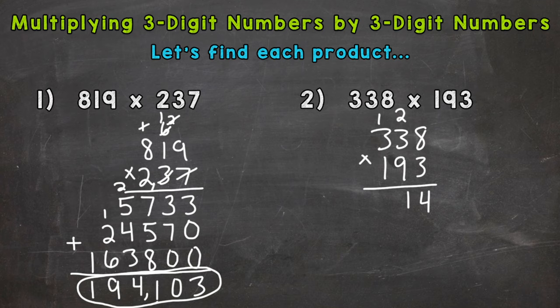We move to the 9 which has a value of 90, so we need a 0 here. 9 times 8 is 72. 9 times 3 is 27 plus 7 is 34. 9 times 3 is 27 plus 3 is 30. We get 30420.